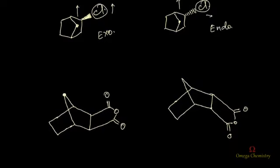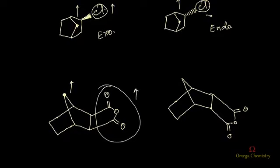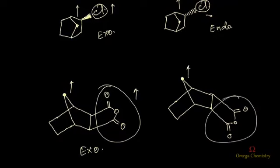Now here, this is the bridge carbon and it is pointing upwards, and this ring is also pointing upside — that's why we call this exo. Whereas in its isomer, this bridge carbon is pointing upside whereas this group is pointing downside, so we call this endo. Thank you guys!